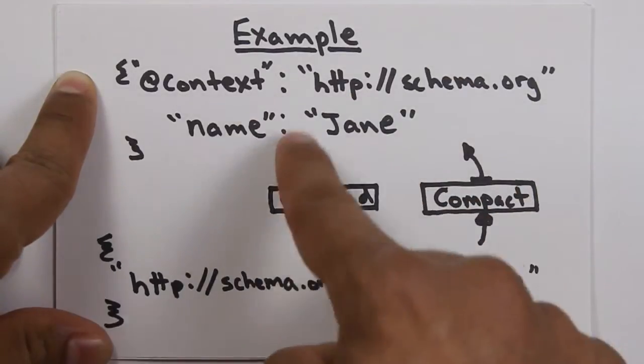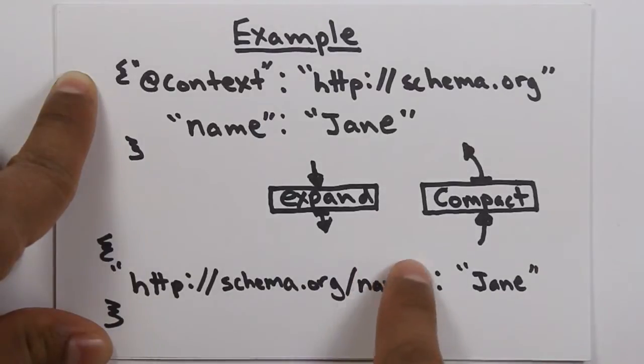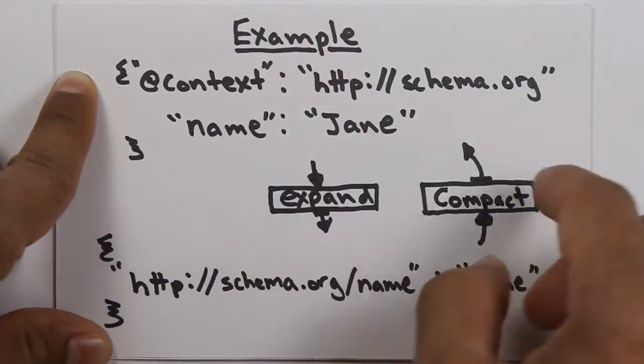So, expansion basically removes context. It applies this context to the data and removes the context, while compaction adds the context back in so that it's easy for a developer to work with the data.